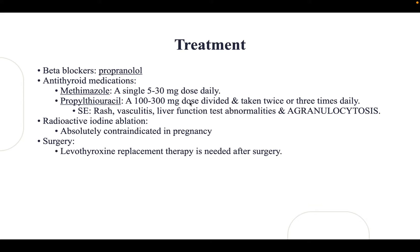For treatment, the goals are to normalize TSH levels and reverse signs and symptoms. We use beta blockers for tachycardia and antithyroid medications like methimazole, given as a single dose of 5 to 30 mg daily. Propylthiouracil (PTU) is given at 100 mg doses, either 150 mg twice daily or 100 mg three times daily. Side effects of PTU include rash, vasculitis, liver function test abnormalities, and agranulocytosis. Effects are seen 1 to 2 weeks after starting therapy.